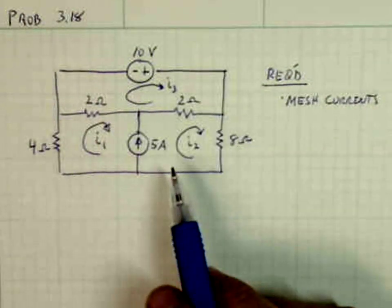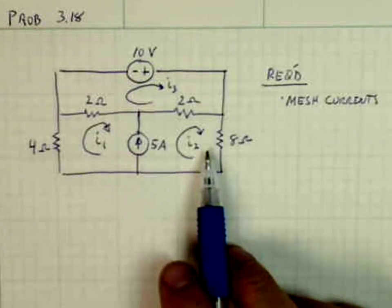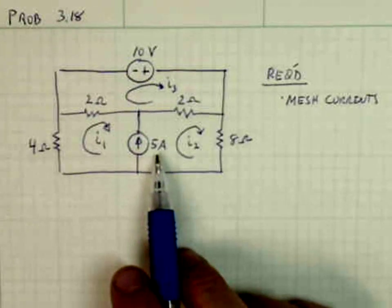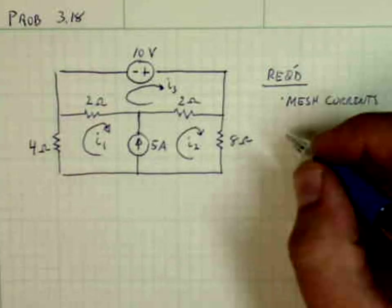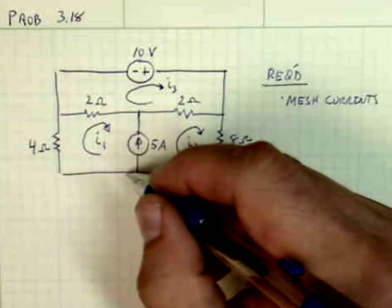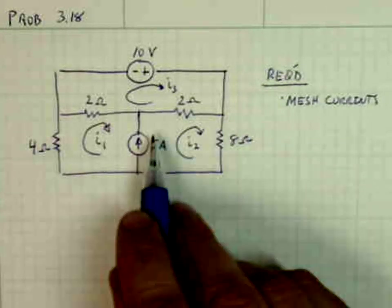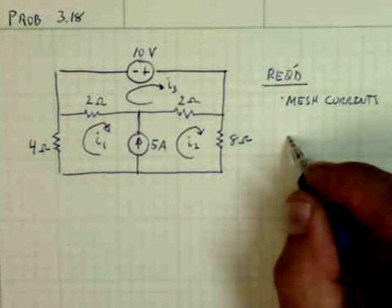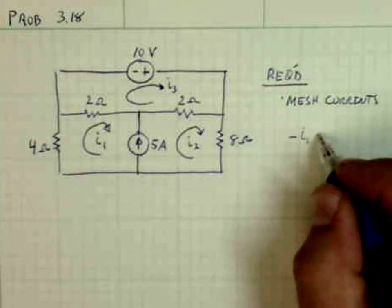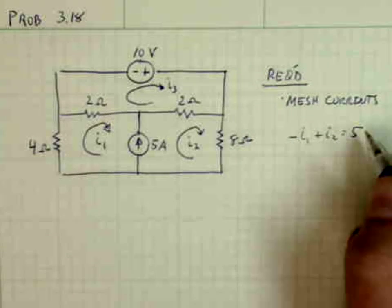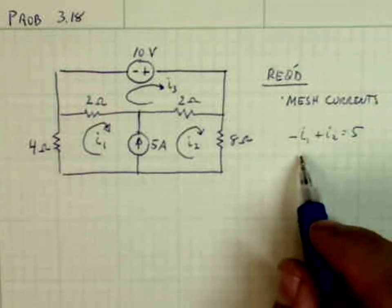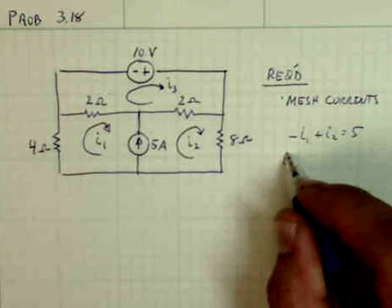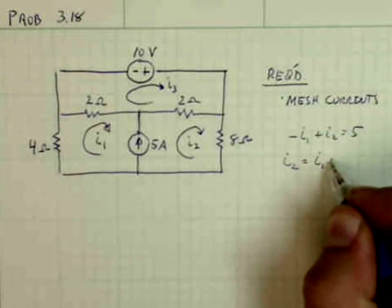First we'll notice that I1 and I2, if we combine them in the center branch here, they somehow better add up to 5 amps. So basically I1 going down plus I2 going up is equal to 5 amps going up. So maybe minus I1 plus I2 is equal to 5, where minus is going down. And so I2 is equal to I1 plus 5.